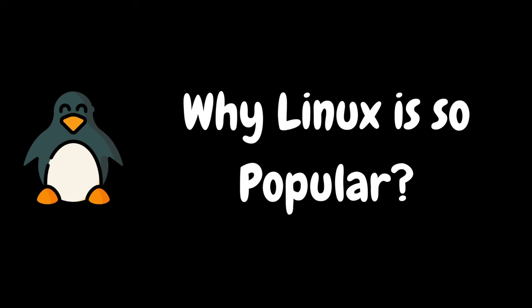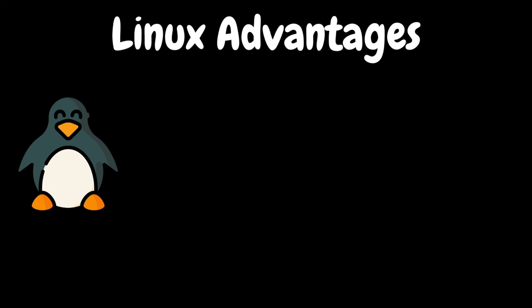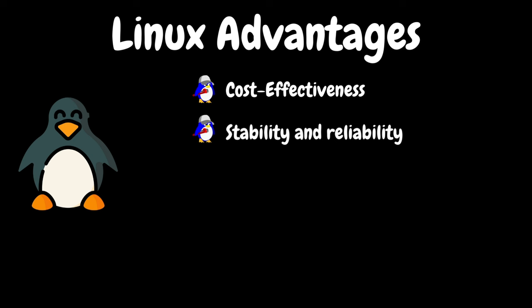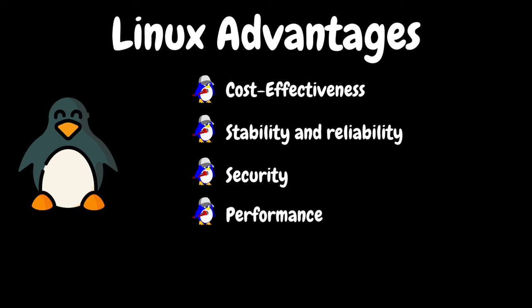You must be wondering why Linux is so popular when we have Windows. So let's look at some of the advantages. Linux is open source and usually free to use, which significantly reduces licensing costs compared to proprietary server operating systems like Windows Server. Linux is renowned for its stability and reliability, making it the preferred choice for critical server environments. Linux-based servers often experience fewer crashes and require less maintenance. Linux is inherently more secure due to its Unix-like architecture and robust security features — its permission system, user privilege management, and regular security updates contribute to its strong security posture. Linux is known for its excellent performance, particularly in server environments; its efficient use of system resources, low overhead, and scalability make it well suited for high-volume workloads. Linux also scales easily to accommodate growing server infrastructure needs, whether running a single server or a large cluster, and there are many other advantages as well.